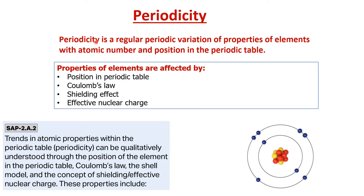What is periodicity? Periodicity is a regular periodic variation of properties of elements with atomic number and position in the periodic table. As the word suggests, something recurs after a certain interval. For example, in the first column we have hydrogen, lithium, sodium, and so on. After hydrogen comes helium, then lithium — yet hydrogen and lithium have similar properties. Similarly, lithium and sodium share similar properties. These properties of elements are affected by four factors.